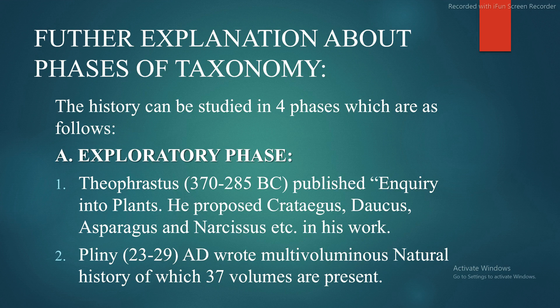Further explanation about the history of taxonomy phases: the exploratory phase began with Theophrastus (370–285 BC), who published Enquiry into Plants and proposed genera such as Crataegus, Daucus, Asparagus, and Narcissus in his work.